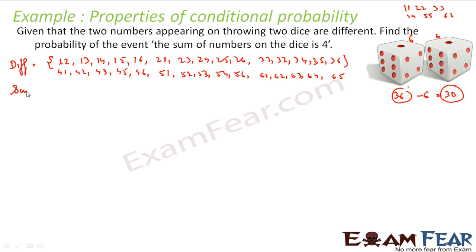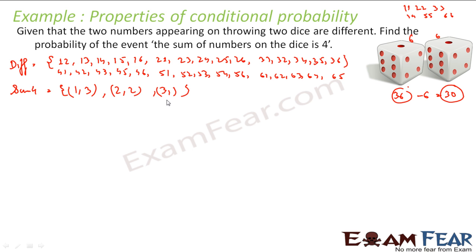The second set is where the sum is 4. Sum equal to 4 will have elements such as (1,3) which gives you 4, (2,2) which gives 4, and (3,1) which gives you 4 — only 3 possible options.